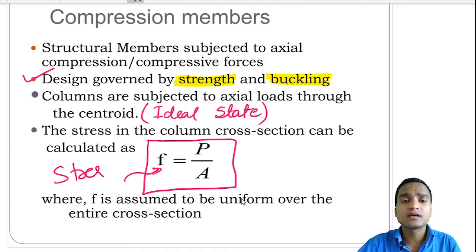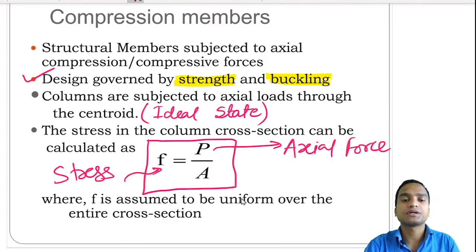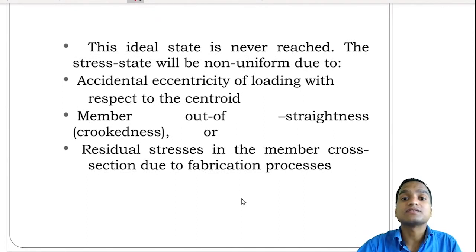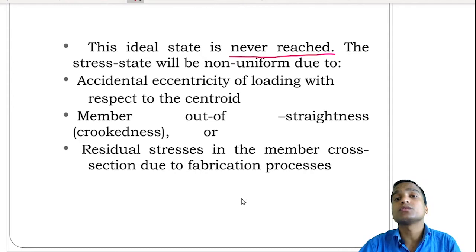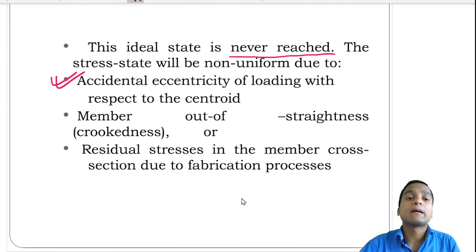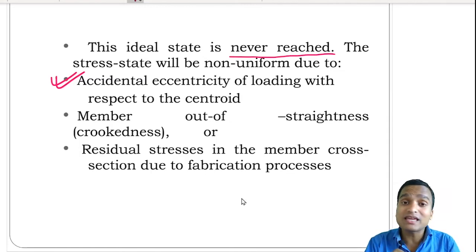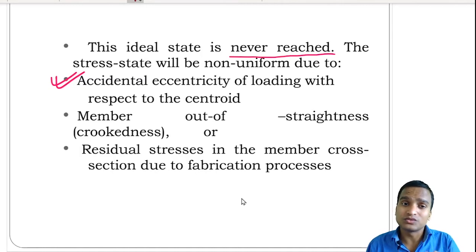Here F represents stress in Newton per mm² and P is the axial compressive force applied from an external source. In general this applies in the ideal state. But we know the ideal state is never attained. In real life the stress state is generally non-uniform. There are three possible reasons for non-uniformity: the very first is the presence of accidental eccentricity of loading with respect to the centroidal axis. Even a little eccentricity causes development of an unnecessary bending moment of magnitude P times E.